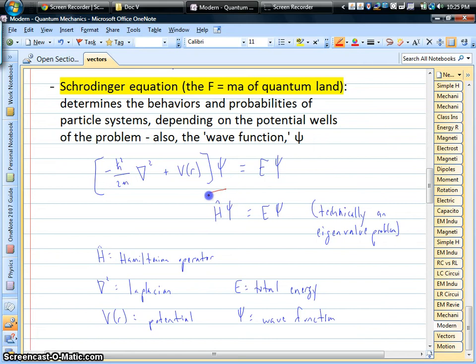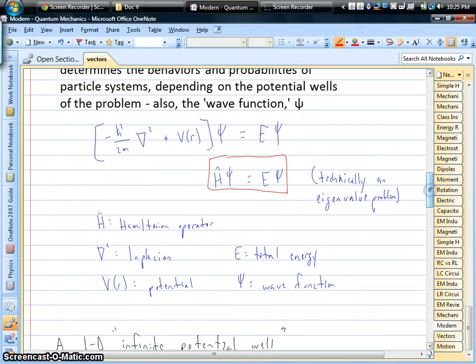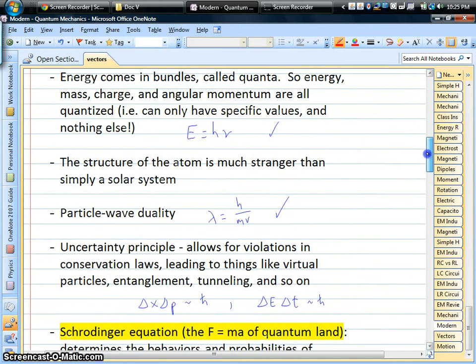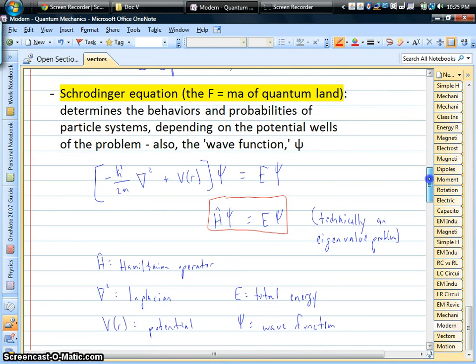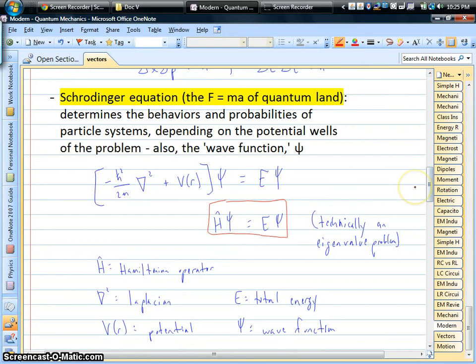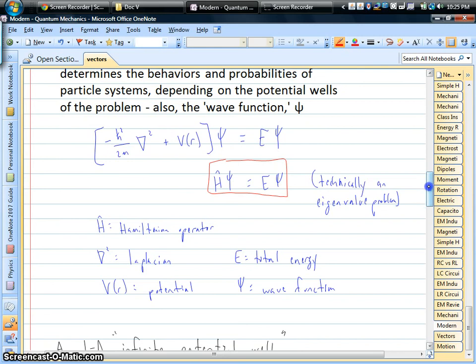In chemistry, this thing in the brackets is called the Hamiltonian operator. It's basically your total energy given on the right-hand side. And the psi, the pitchfork, is called the wave function. That's part of the weirdness where particles and waves are interchangeable. Everything in the Schrödinger equation is described in its wave form, even particles.